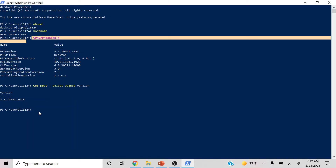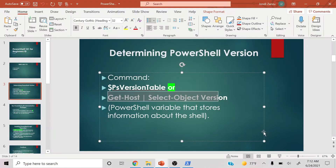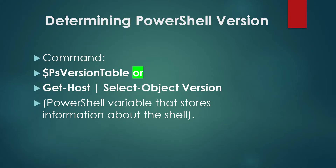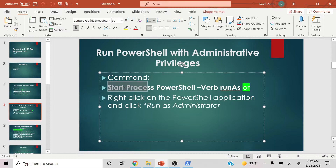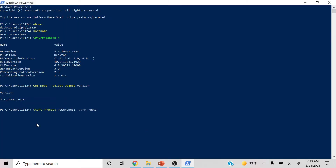Over time it'll make a lot more sense, but for now this is just so you can get used to playing with this terminal. Next, we're going to run PowerShell with admin privileges. There are one or two ways to do this. The first way is this command right here called 'Start-Process PowerShell -Verb RunAs.'